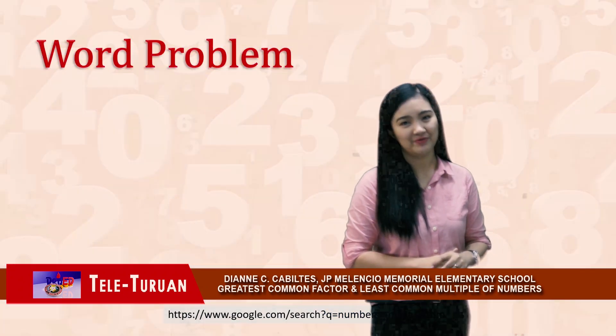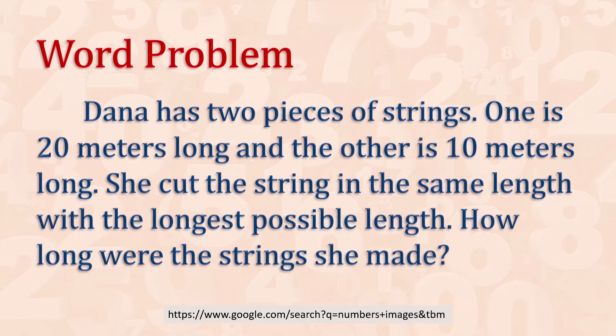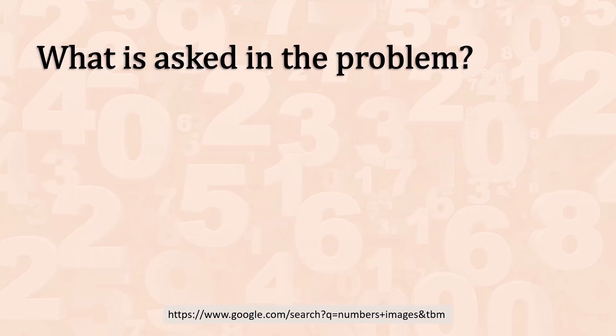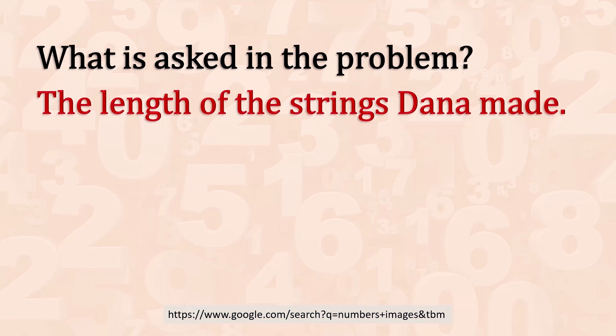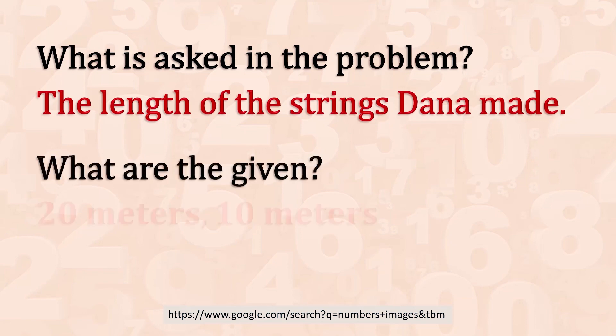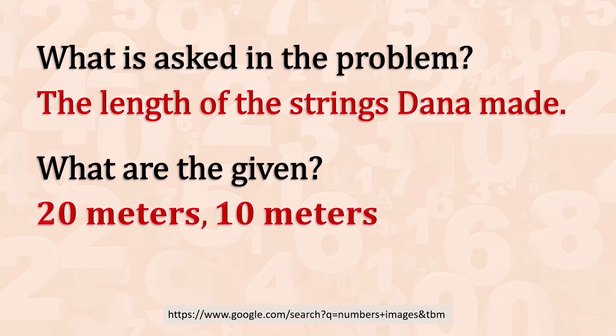Let's start the lesson with a word problem. Dana has 2 pieces of string. One is 20 meters long and the other is 10 meters long. She cuts the string in the same length with the longest possible length. How long were the strings she made? What is asked in the problem? The length of the strings Dana made. What are the given? 20 meters and 10 meters.